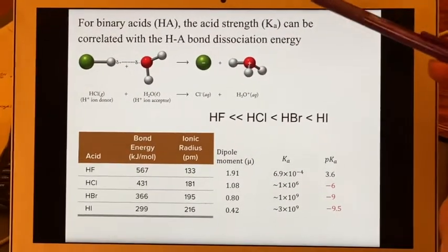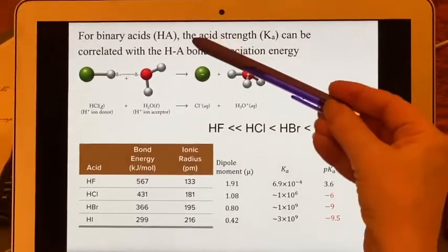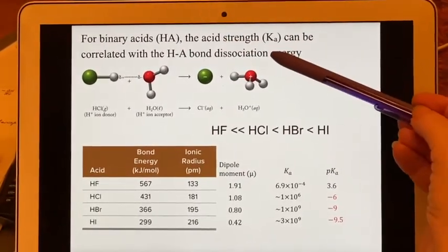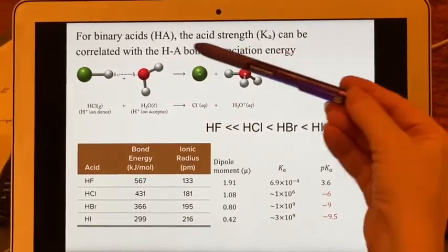All right, we're going to talk about binary acids, hydrogen attached to one other atom. The acid strength, Ka, is correlated with the bond dissociation energy.